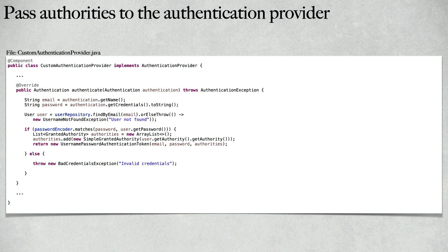The last step is to pass the authorities to the authentication provider. Inside the custom authentication provider, we were previously passing an empty ArrayList. Now we will create a list of type GrantedAuthority, add a SimpleGrantedAuthority using the authority from the user object, and pass that authorities list to the UsernamePasswordAuthenticationToken. That's it — we've created the relationship, customized the HTTP request, and are passing the authorities.